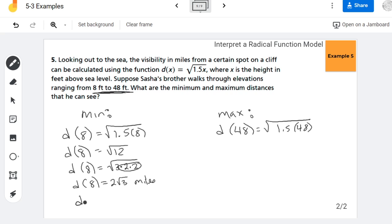Okay? So in this case, it's approximately 3.5 miles. So now let's look at it with the 48. So 1.5 times 48 is 72.